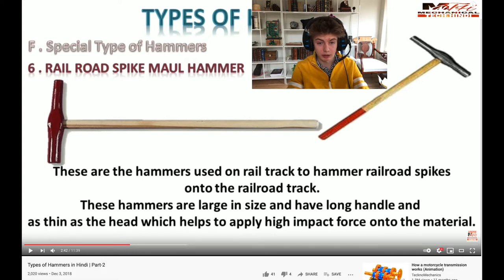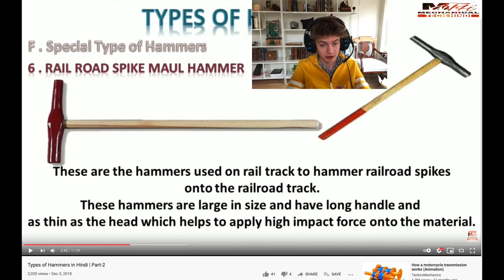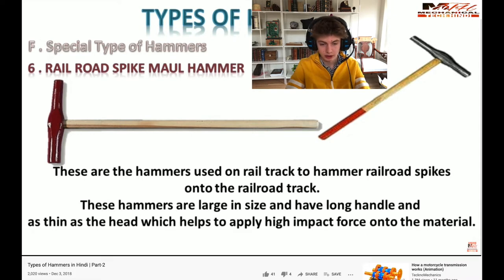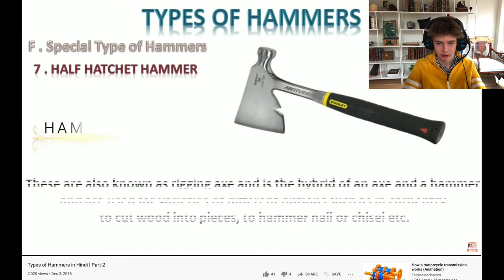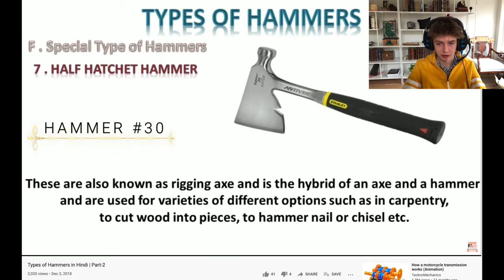It's a mall hammer - oh my goodness! You're just going to nail those railroad spikes, no problem. It's like for road and rail use. The impact force is larger with these hammers. This one's actually kind of cool - I like this one. It's a rigging axe because of the ticket or your hand usage. It has varieties of different options such as in carpentry - he probably doesn't have a Hindi word for it so he just throws it in.